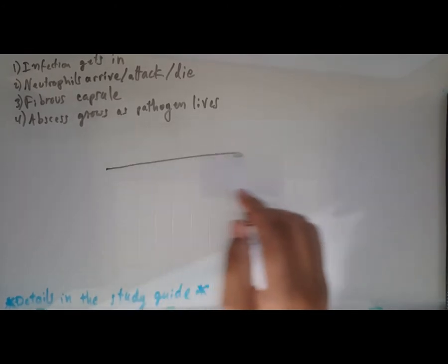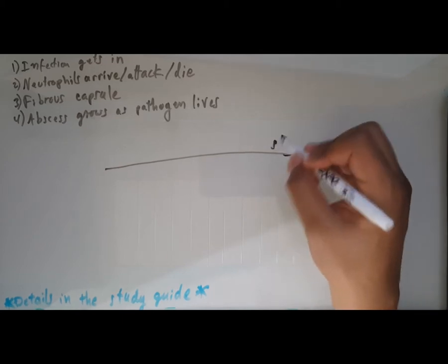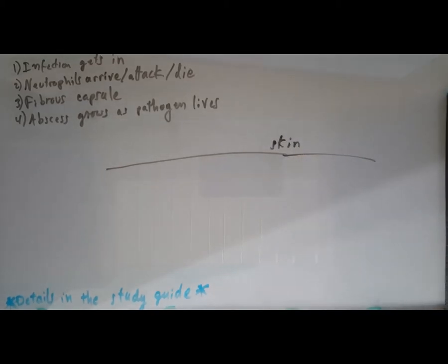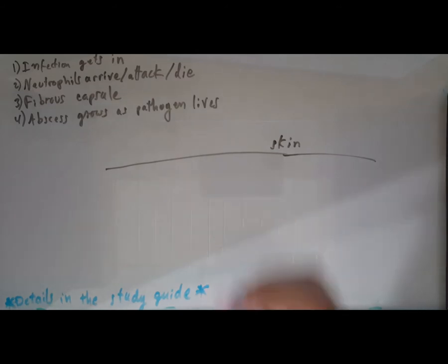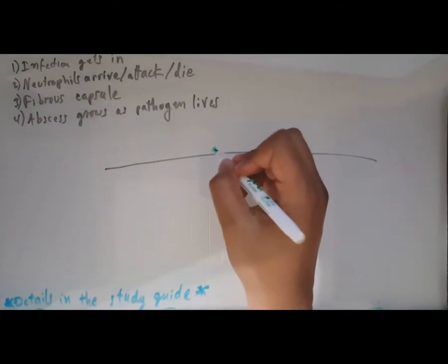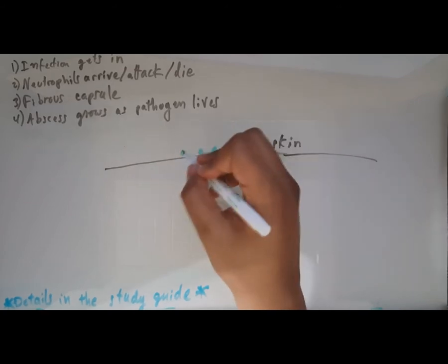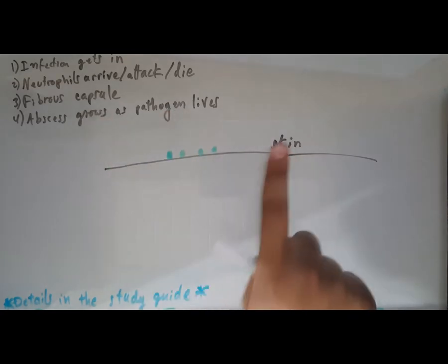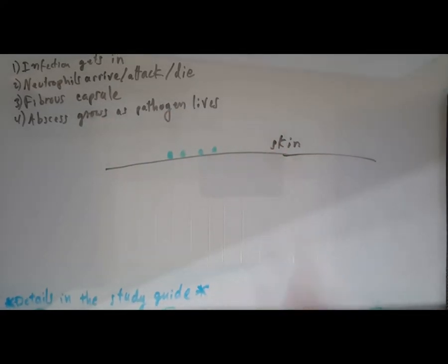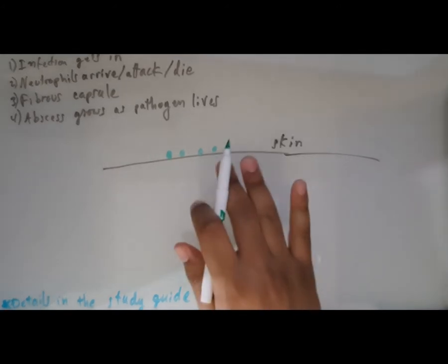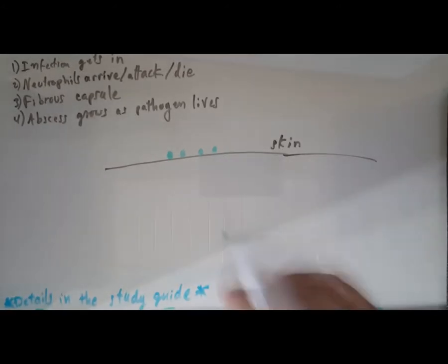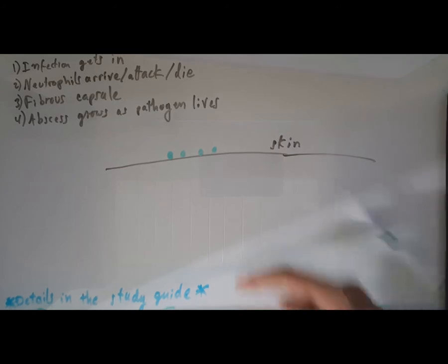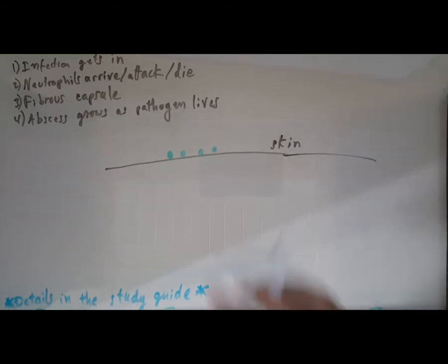First off, let's draw some skin here. On your skin you have a lot of different bacteria but we're going to go with staph aureus for this example, because staph aureus is the number one most common reason for abscesses of the skin.